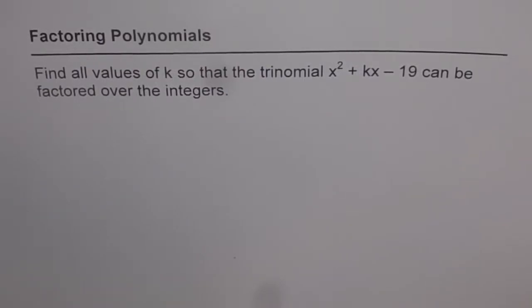Factoring polynomials. Find all values of k so that the trinomial x squared plus kx minus 19 can be factored over the integers.